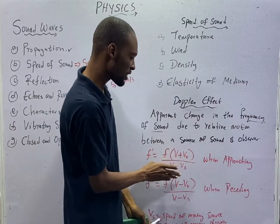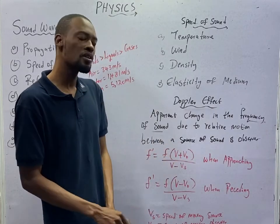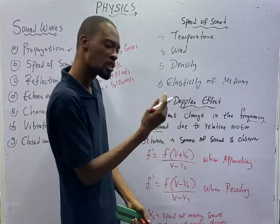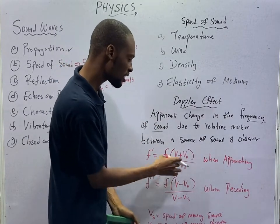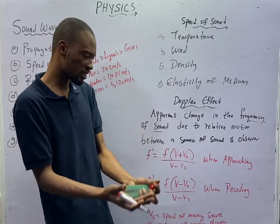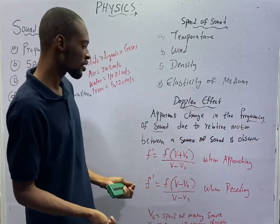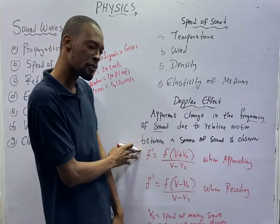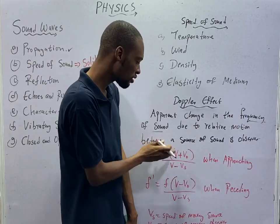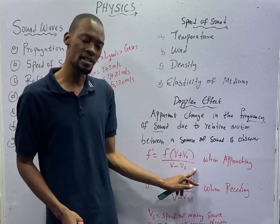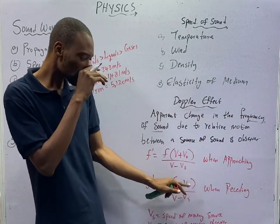All the places, all the places you are seeing v, v, v, v, v, v, they all stand for speed. But when there is O under, it means observer. S under, it means the source of the sound, the person carrying the sound or where the sound is coming from. So when approaching, f prime is equal to f prime is equal to f v plus v no, all over, v minus vS. Write this down. When receding, f prime is equal to f bracket, v minus v0, all over, v minus vS.